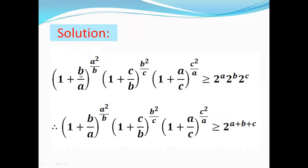So we will have (1 + b/a)^(a²/b) multiplied by (1 + c/b)^(b²/c) multiplied by (1 + a/c)^(c²/a) is greater than or equal to 2^a · 2^b · 2^c. Here we have the same base so we can add up the powers, therefore we get this term is greater than or equal to 2^(a + b + c).